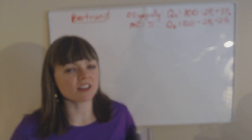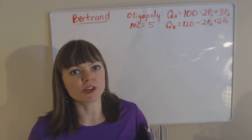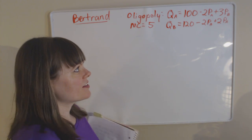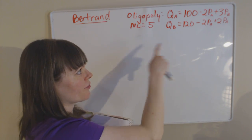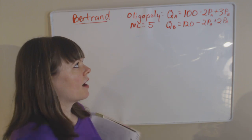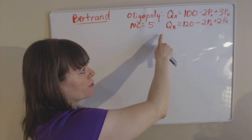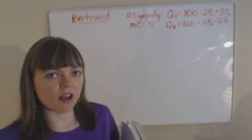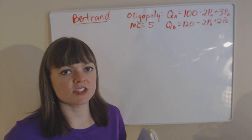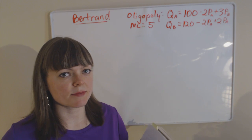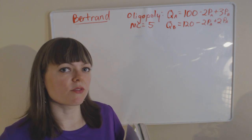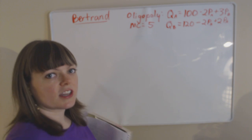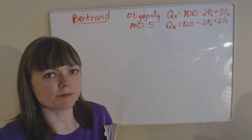I'm doing a Bertrand oligopoly problem, or a duopoly problem because there's only two players in this industry. The demand curves for those two players are given: firm A's demand curve is here and firm B's demand curve is here. Since it's a Bertrand oligopoly, they make their price decisions simultaneously and reveal their prices to each other. The marginal cost of production is 5 for both firms.